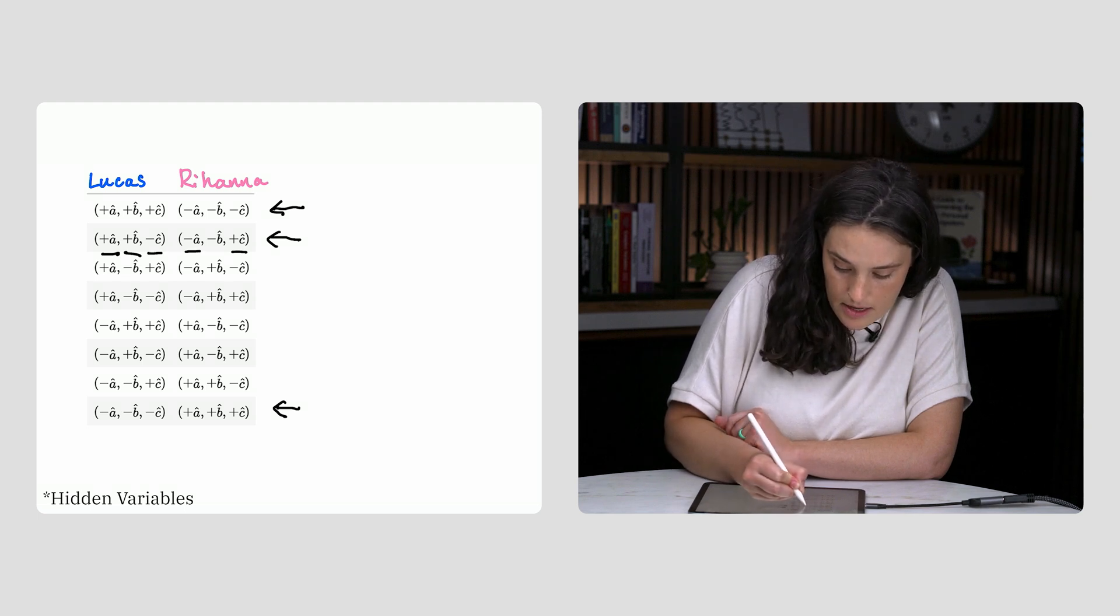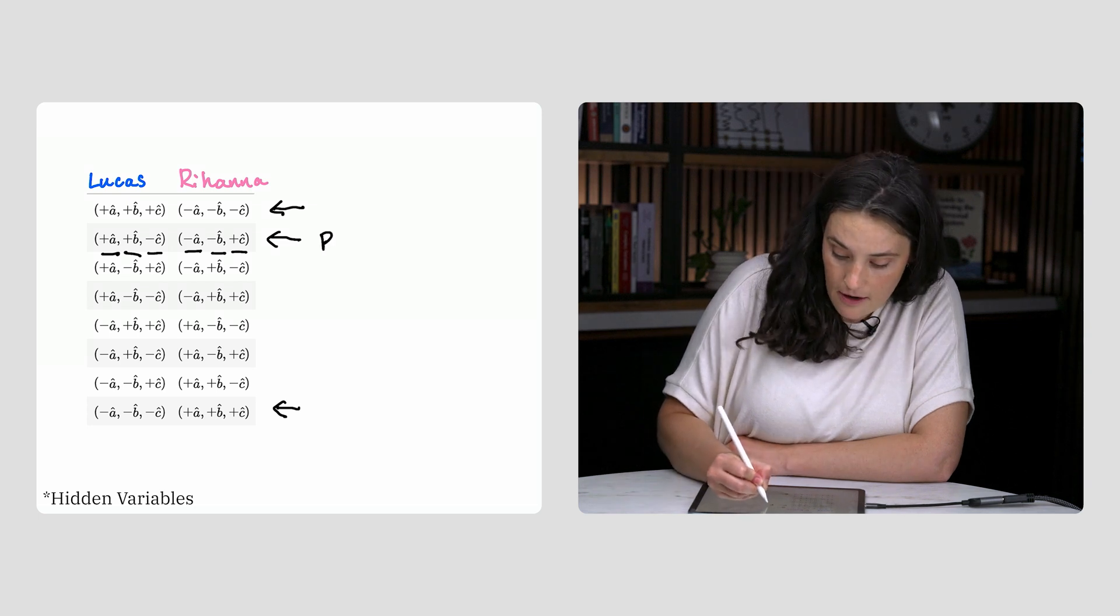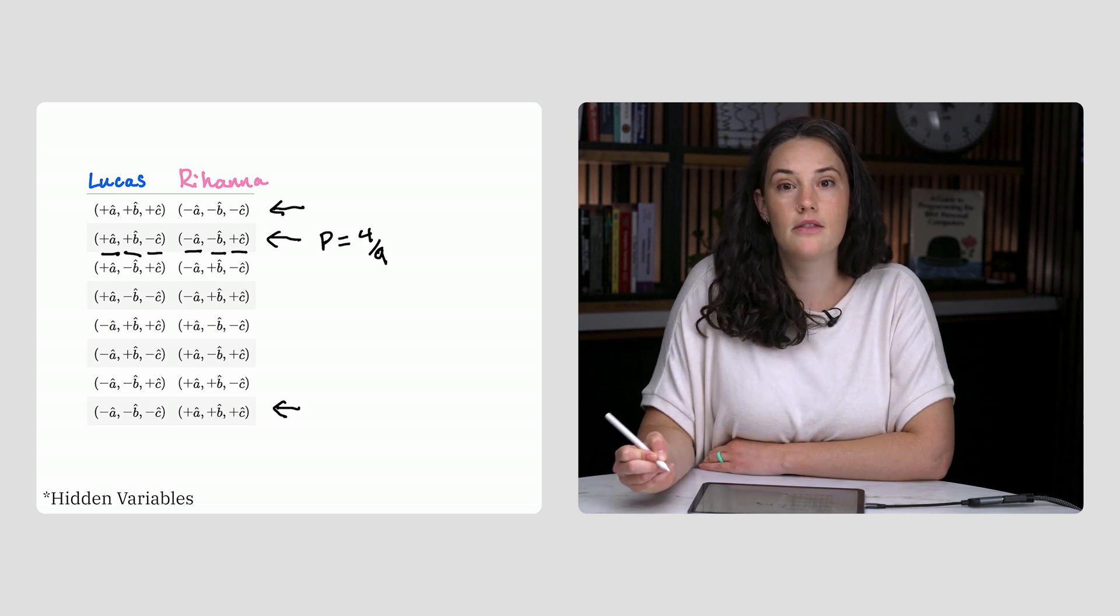or if Lucas measured along C, and Rihanna measured along either A or B. So that's 4 out of 9 of the possible measurement combinations that will give Lucas and Rihanna the same sign.